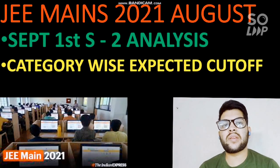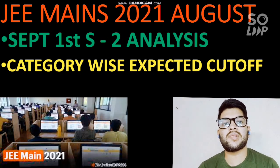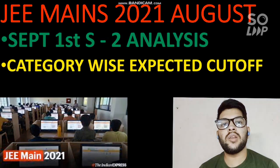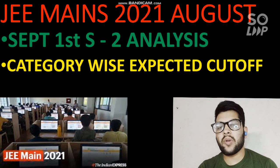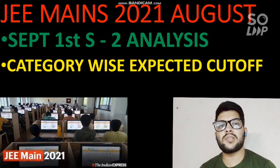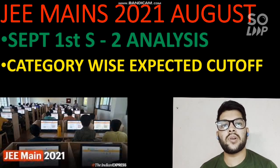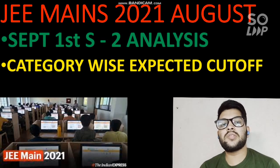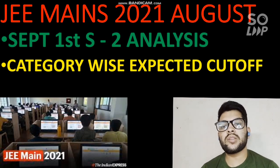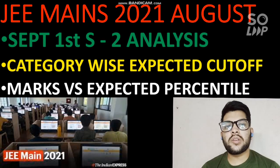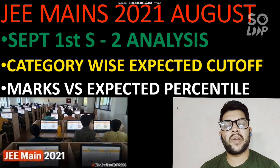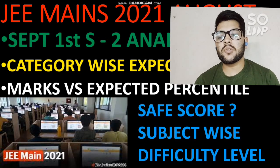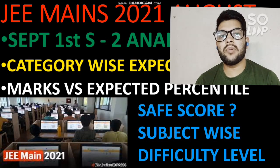Here I will provide the category-wise expected cutoff for the JEE Advanced examination — for each category: General, OBC, EWS, SC, ST — how many marks you should get at least to be eligible. I will also provide the marks versus expected percentile so you can estimate your percentile based on your expected marks, and I will talk about the safer score and subject-wise difficulty level for Math, Physics, and Chemistry separately.